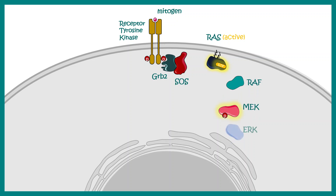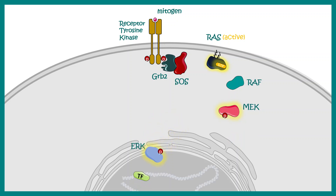MEK further activates and phosphorylates ERK. ERK is another kinase which then translocates into the nucleus and interacts with several transcription factors and RNA polymerase, allowing gene expression to happen. This is how the downstream cascade in the RAS MAP kinase pathway takes place.